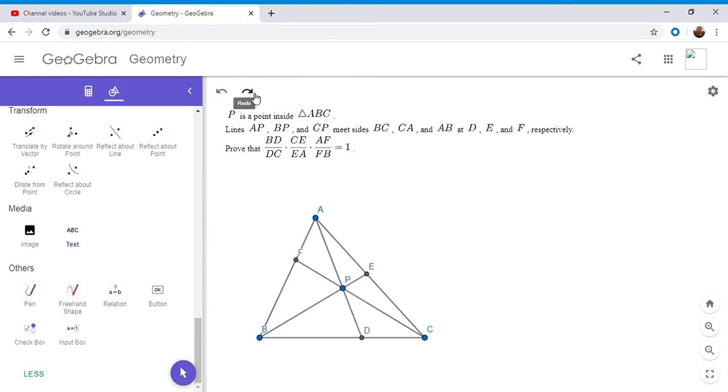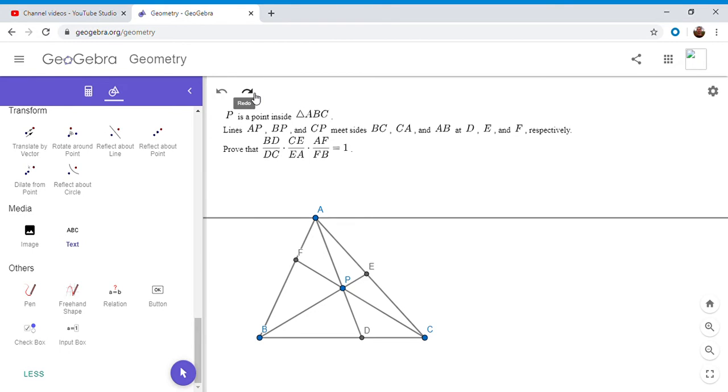So for the first proof, we draw a parallel through point A to the side BC. And then we extend CF and BE, and we let it meet that parallel at G and H. All right, so now I'm going to delete some of the excess.